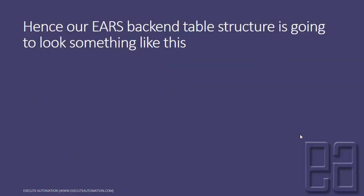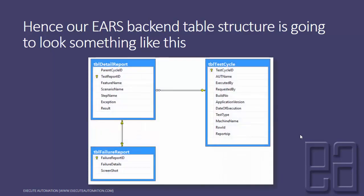Our backend table structure is going to look something like this, addressing all the considerations we saw in the previous slide. We are going to design only three tables — just three tables: TBL Test Cycle, TBL Detail Report, and TBL Failure Report. They have a foreign key and primary key constraint relationship, and the reason is that only then will it be integrated and work properly without any isolation. So let's talk about these tables in detail.